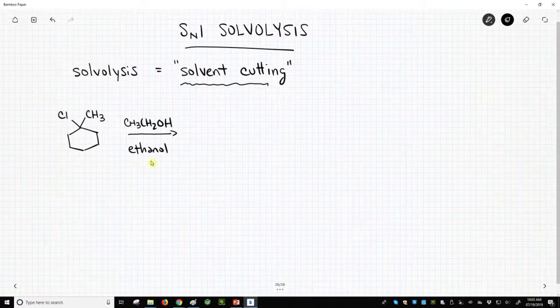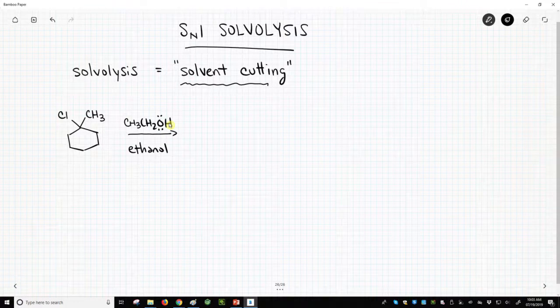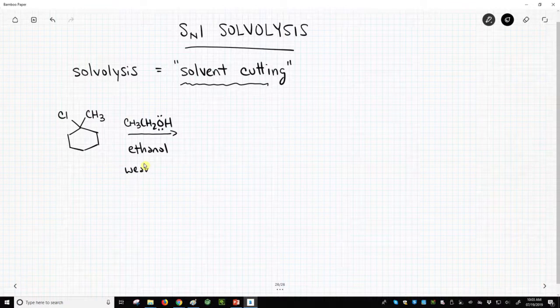And ethanol is electron-rich. The oxygen has electron density, but it's not really electron-rich. This is going to be a nucleophile, but it's going to be a weak nucleophile. It's not a bad thing. It's a good thing for an SN1 to have a weak nucleophile.